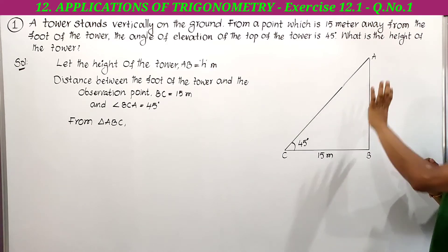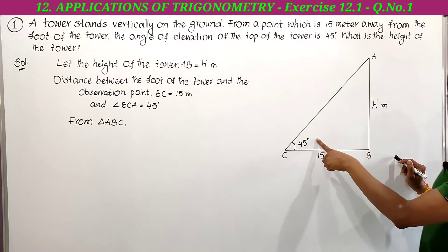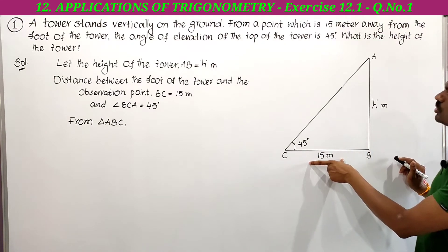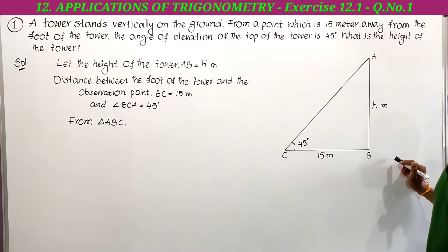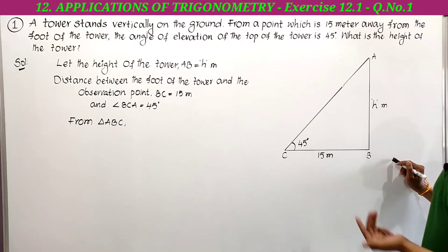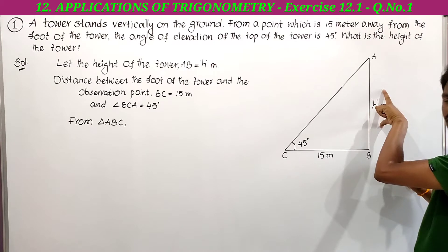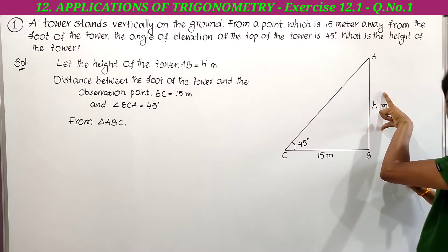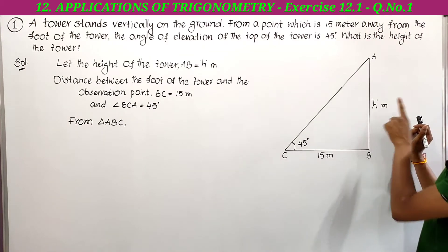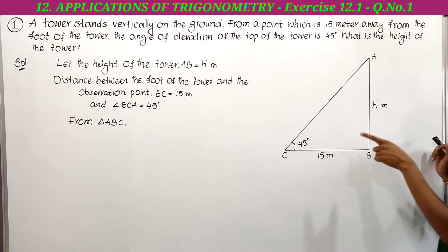This is a right angle triangle. Here we have one angle and one side, so we can use trigonometric ratios to find the remaining sides. We are asked to find the height of the tower, which is AB. Let the height of the tower be h meters.